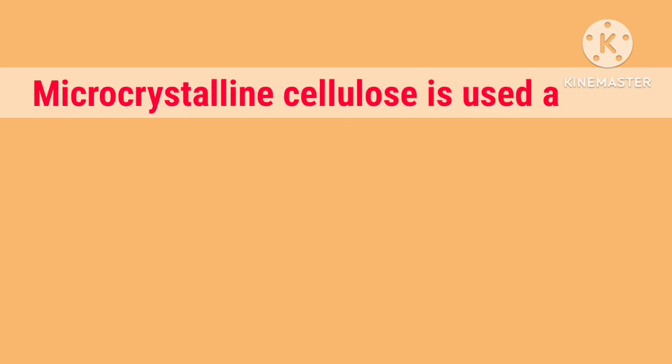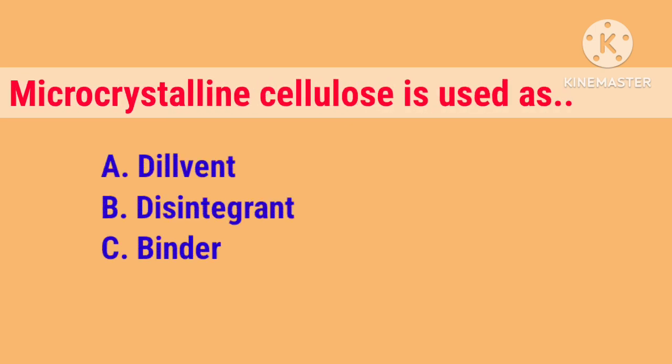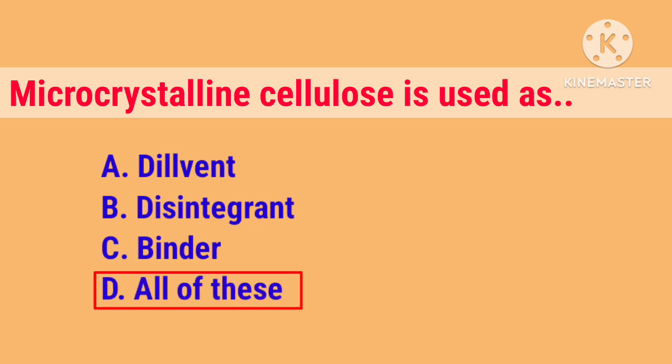Microcrystalline cellulose is used as: Option A. Diluent, B. Disintegrant, C. Binder, D. All of these. Right answer is D. All of these.